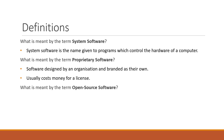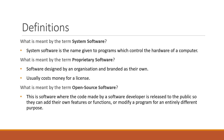So finally, what is open source software? This is software which has been created by a software developer, who has then released the source code to the public so that they can add their own features and functions, or they can modify the program for an entirely different purpose. Open source software is often free.